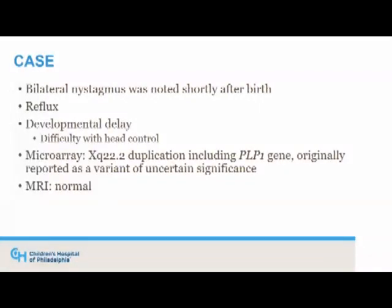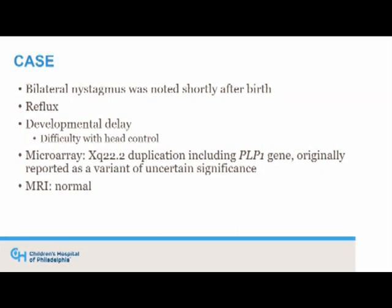I would like to present a case. This young man presented with bilateral nystagmus shortly after birth. He had reflux and some drooling of formula. He had early developmental delay starting with difficulty with head control. His pediatrician sent a microarray because of developmental concerns and noted a duplication of PLP1, which was originally reported as a variant of uncertain significance. He was then sent for follow-up, neurology ordered an MRI, and that MRI was reported as normal.